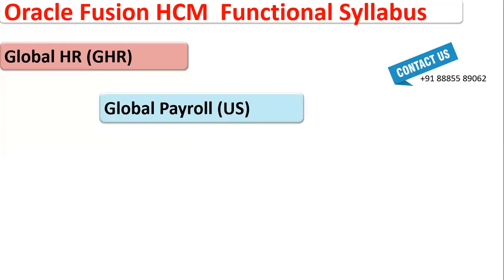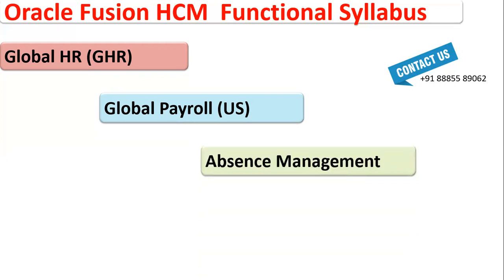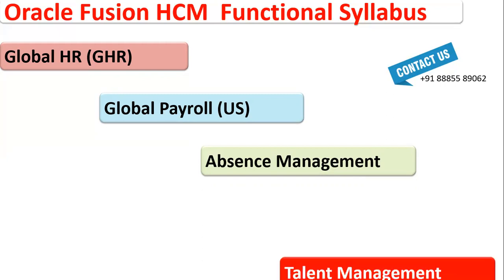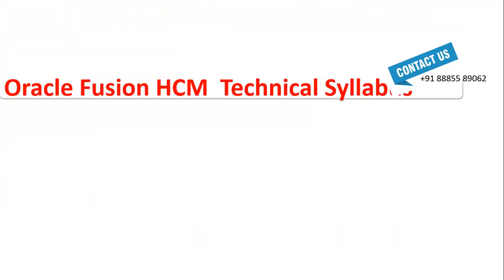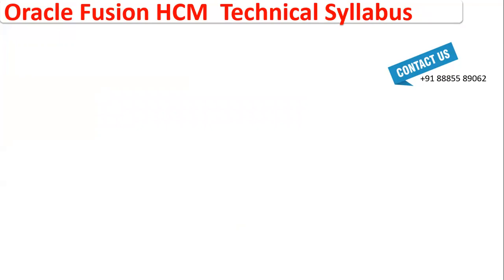Then we'll talk about the Global Payroll module — this is US legislation payroll. After that we'll be talking about Absence Management, which is essentially leave management. If clients have thousands of employees and different benefit plans for different employees based on eligibility profiles, we'll be using Options Management. Then we'll cover Talent Management, which includes Profile Management, Performance Management, Goal Management, Succession Planning, and Talent Review. After that we'll also talk about why we require some technical knowledge — because nowadays clients expect functional consultants to have some technical awareness to identify problems.